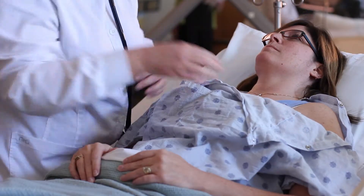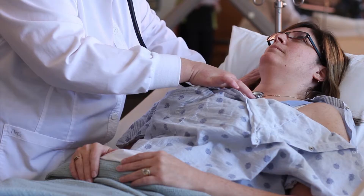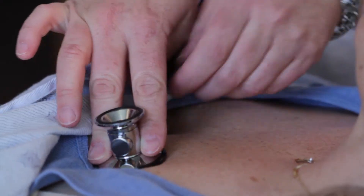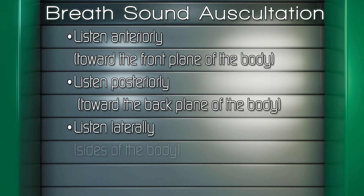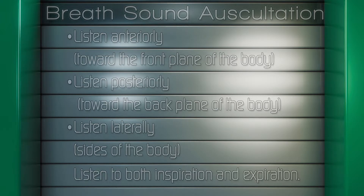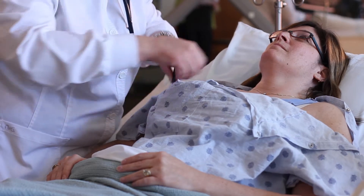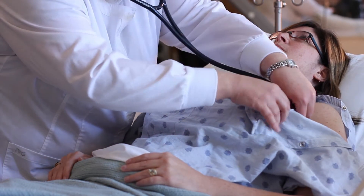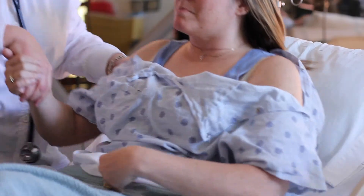Next, auscultate the breath sounds. Ask the patient to breathe evenly in through the nose and out through the mouth. Listen anteriorly and posteriorly, as well as laterally, to inspiration and expiration. While auscultating the breath sounds, watch for skin turgor over the chest area.